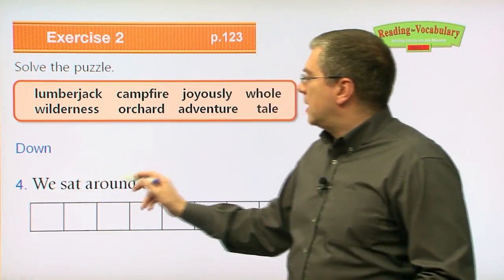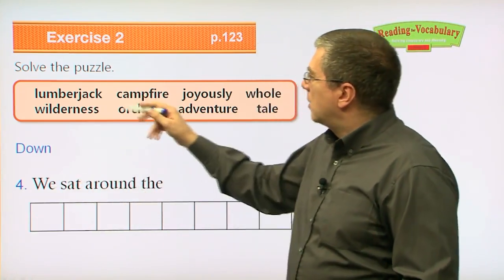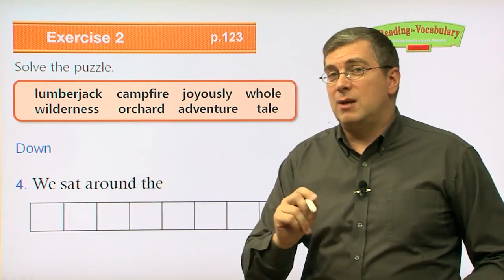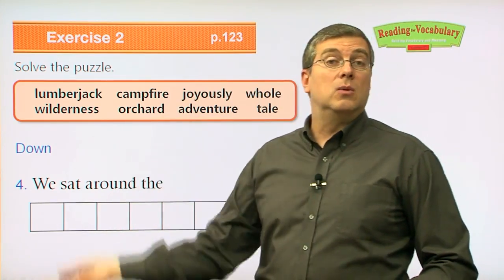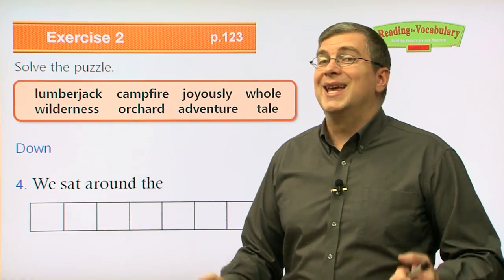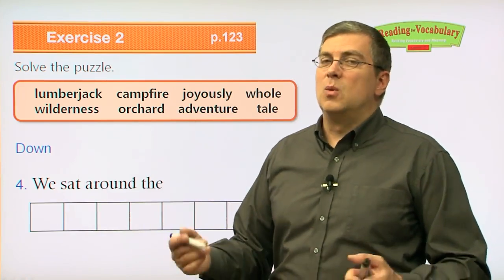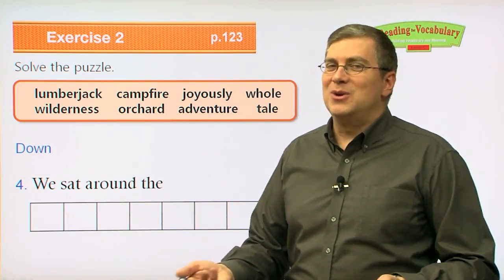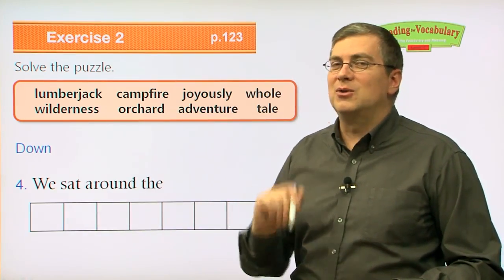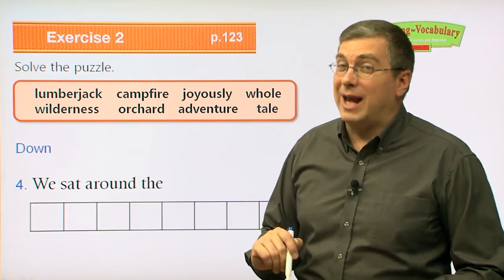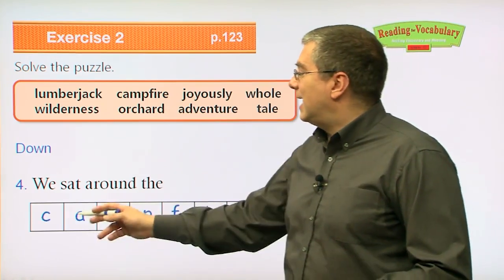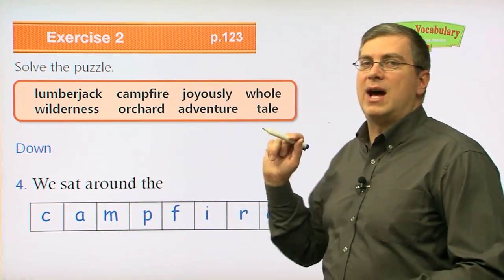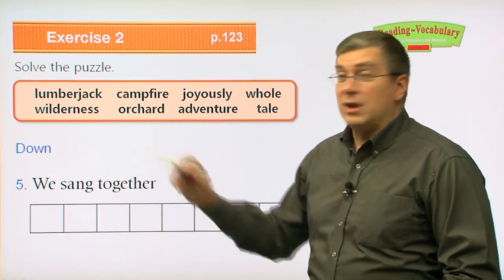Number four going down: 'We sat around the ___.' What would you sit around when you're with your family, out in the woods, camping at night? You build a fire and sit around that fire. What do we call that fire when you're camping? A campfire. We sat around the campfire.